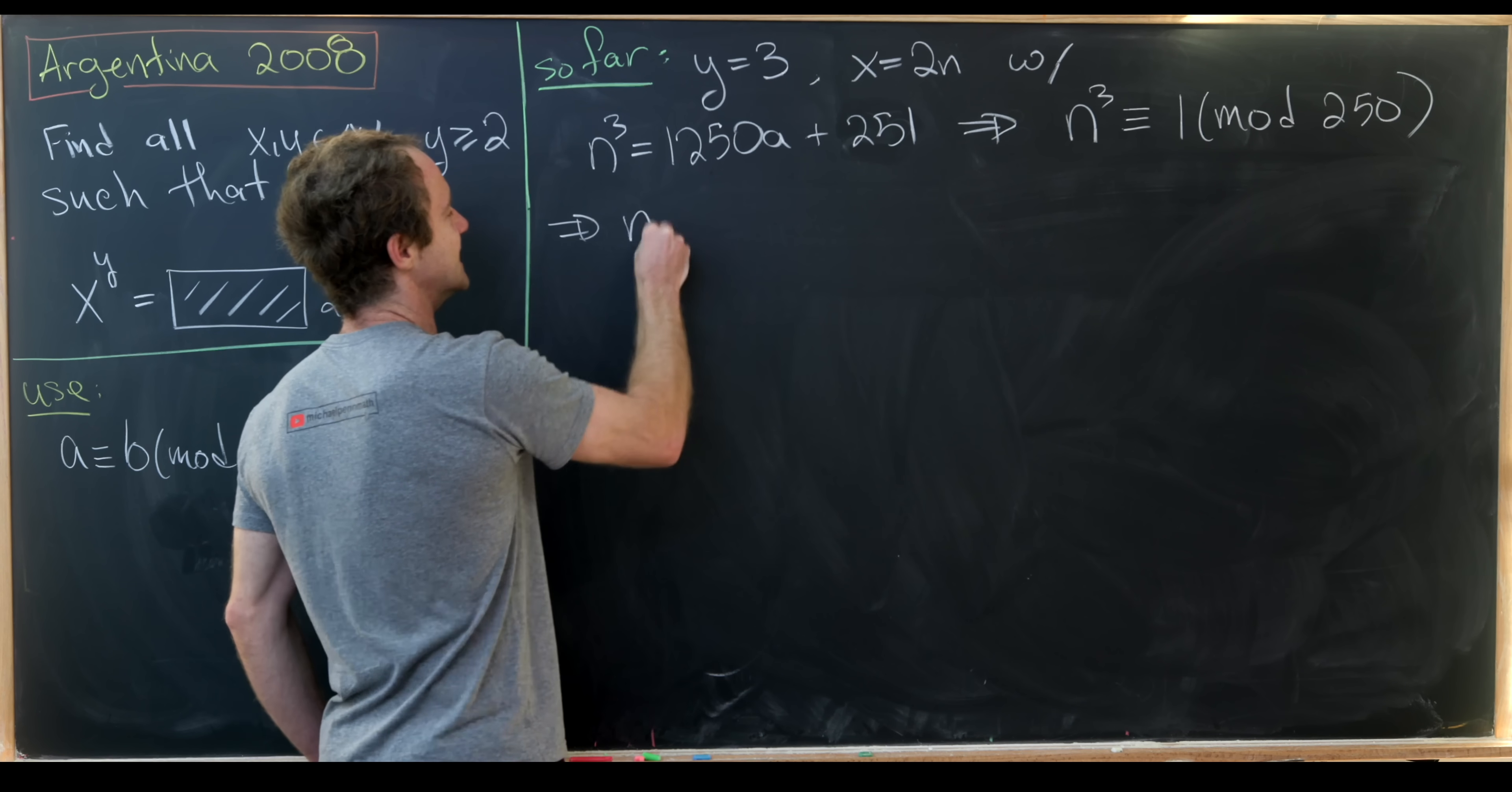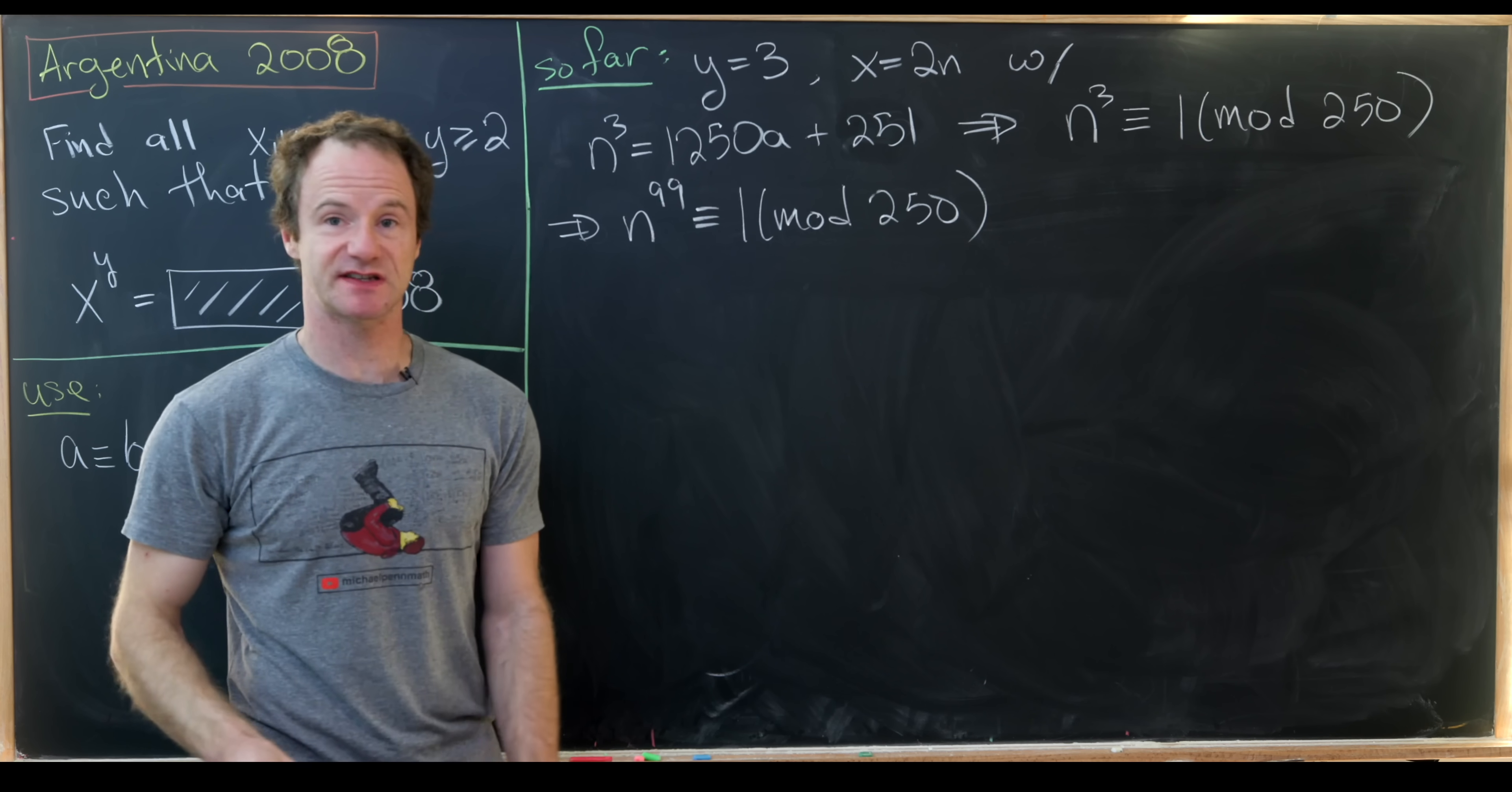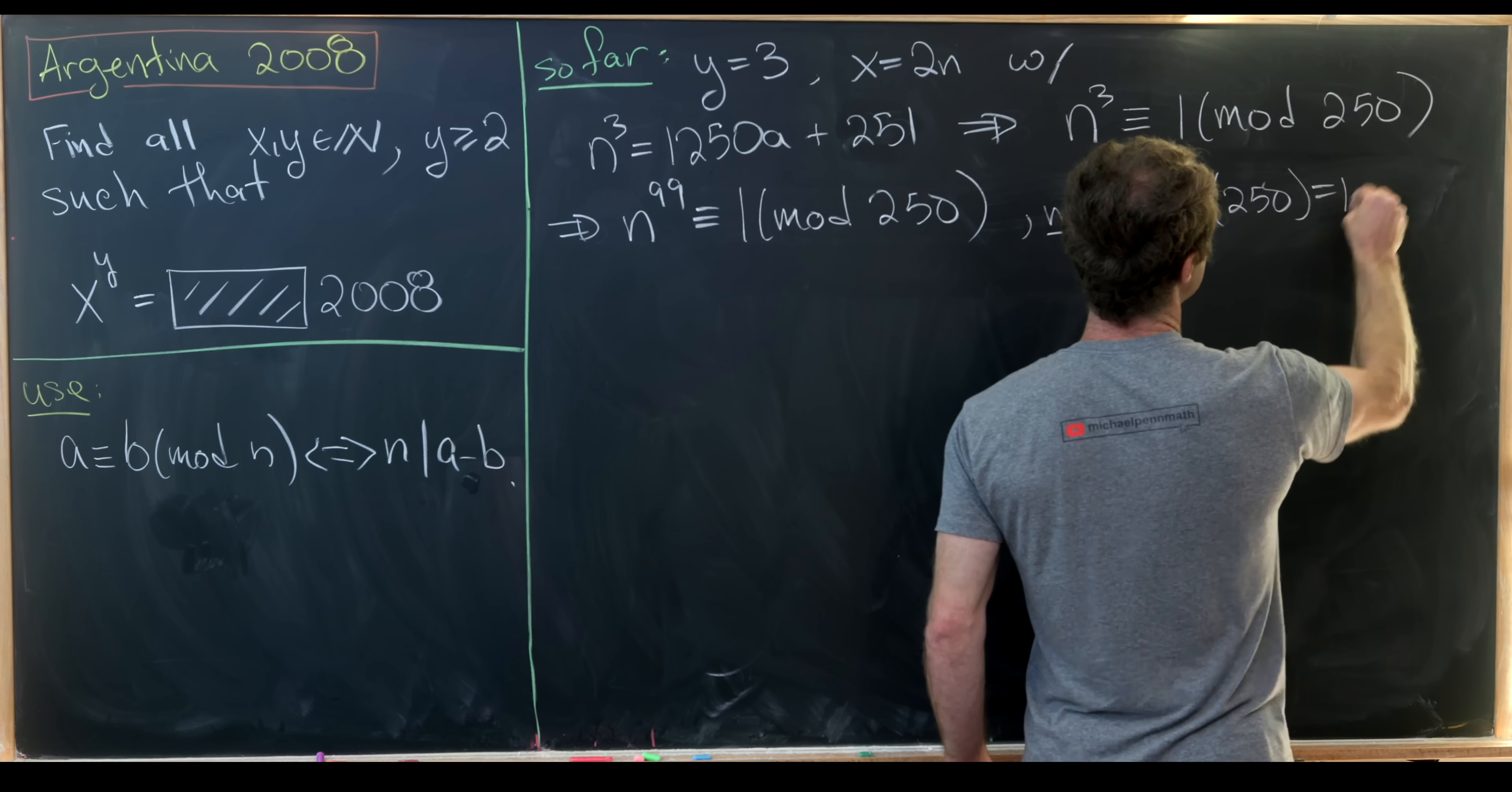And that'll give us n to the 99th power is congruent to 1 mod 250. That seems like a strange step until you note the following fact: Euler's totient function of 250 is 100.